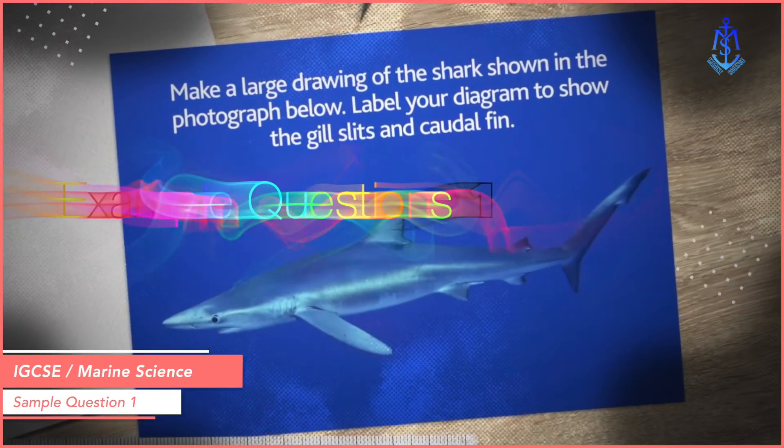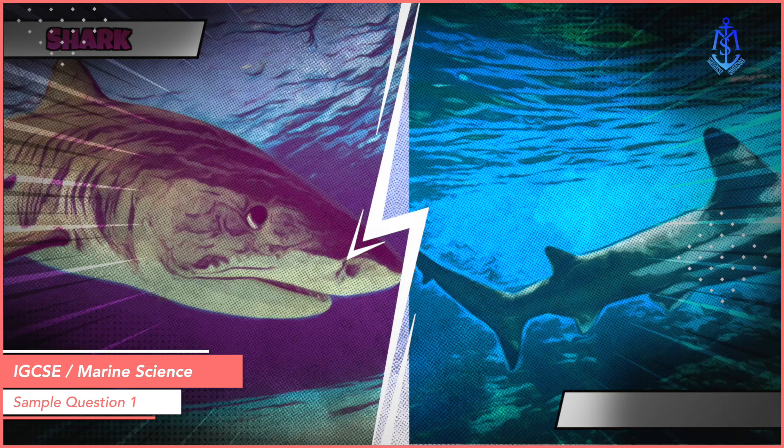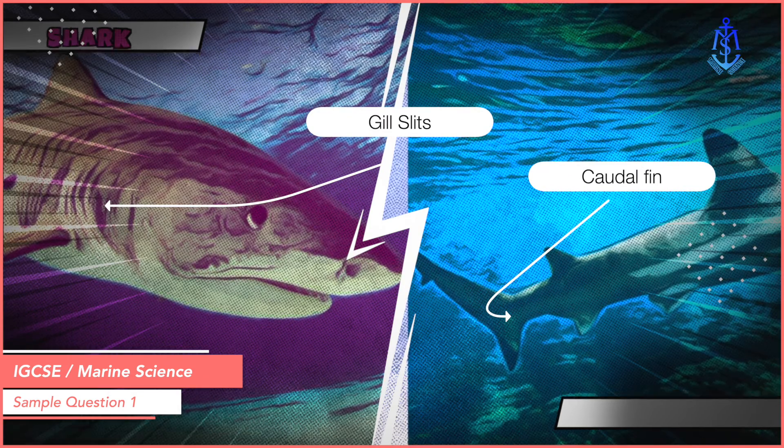In this example question, you're given a picture of a shark and tasked with drawing it while also labeling two of its features: the gill slits and the caudal fin.